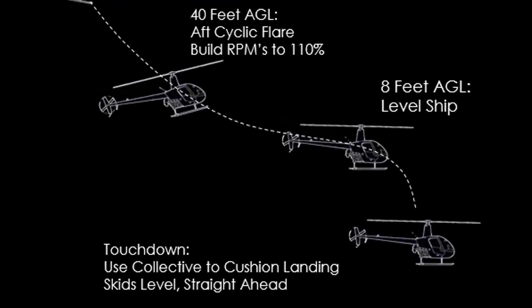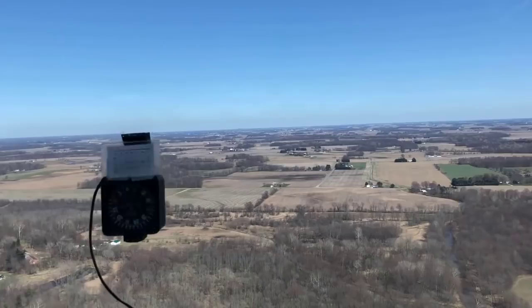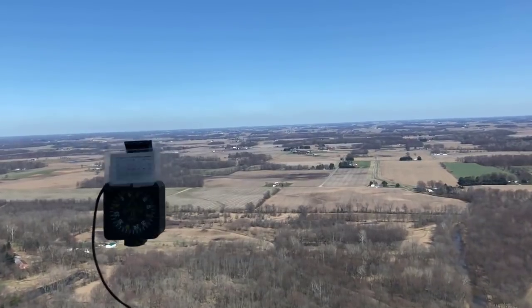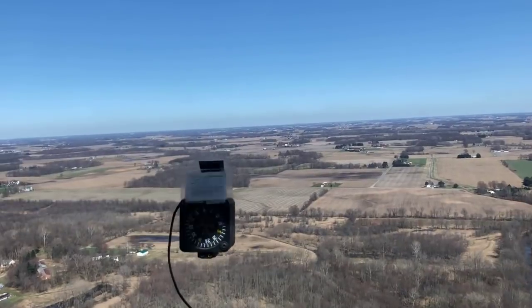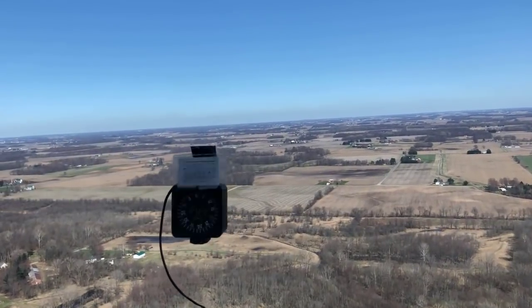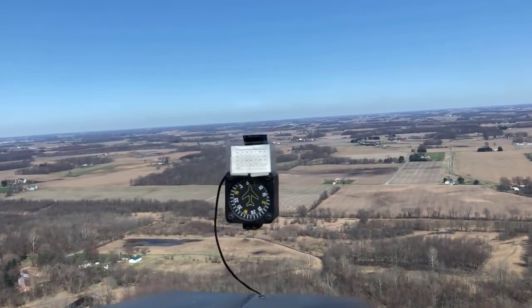Somewhere around treetop level — 40 to 50 feet, again depending on what your aircraft manufacturer says — you're going to start a flare. That flare is to slow the aircraft down to get ready to level it out and raise the collective, either to go to a full touchdown landing or to a hover.